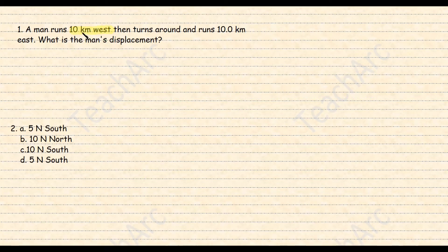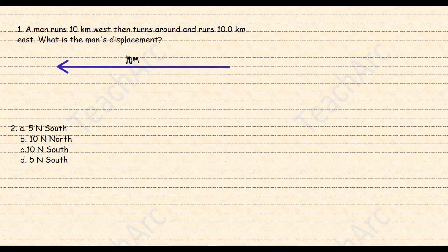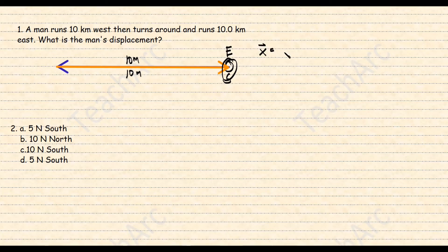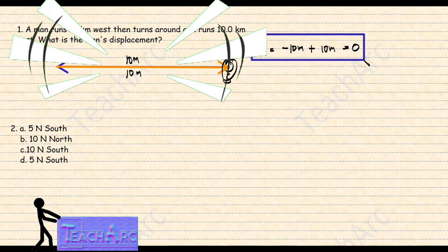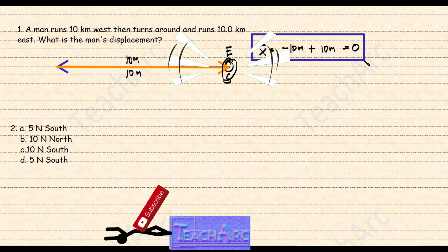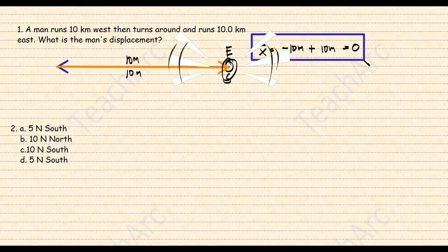For more examples, let's look at a man that runs 10 kilometers west, turns around, and runs 10 kilometers east. After identifying the signs, we can say that the resultant is 0. You can clearly see that using the diagrams as well, since the starting point is the same as the ending point.